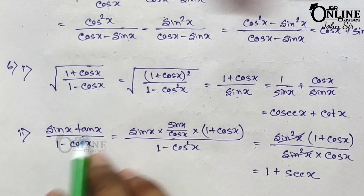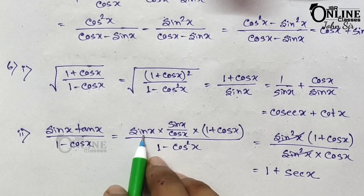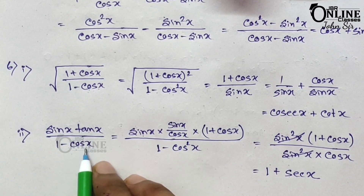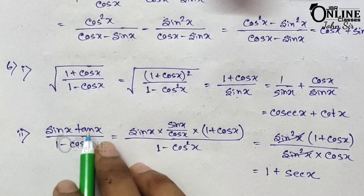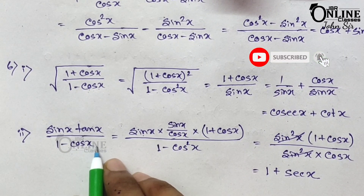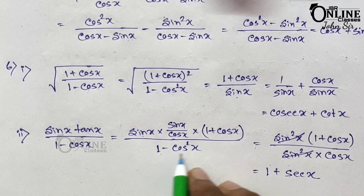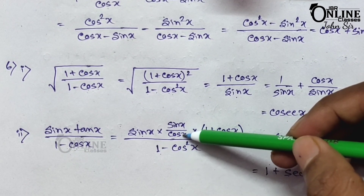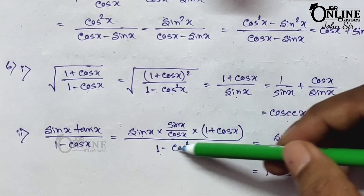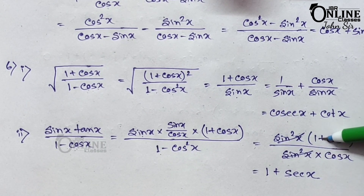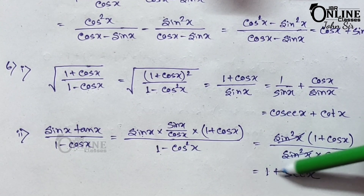Sum number 6.2: sin x·tan x/(1 − cos x) — prove it equals 1 + sec x. Substitute tan x = sin x/cos x. Multiply numerator and denominator by (1 + cos x). The denominator becomes 1 − cos²x = sin²x. The numerator becomes sin²x·(1 + cos x)/cos x. The sin²x cancels, leaving (1 + cos x)/cos x = 1/cos x + 1 = sec x + 1, proved.